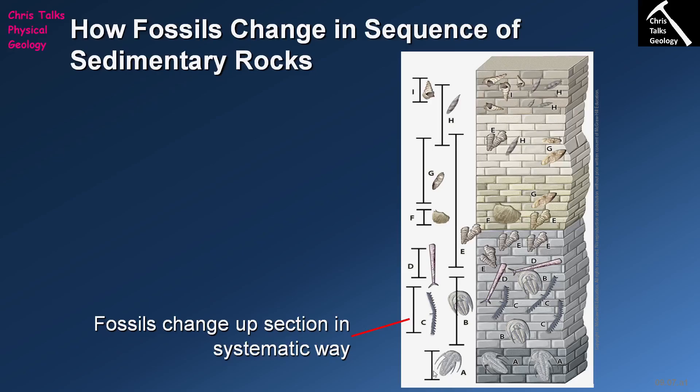For each fossil there is a defined range — beginning the first time the fossil is seen in the geologic record and finishing where it is last seen. For instance, we can clearly see that A precedes B. We don't see A disappearing and then reappearing further up the column. In the real geologic record, fossils occur in a known order, which helps us date rocks because we know where each fossil fits in the sequence.